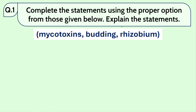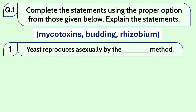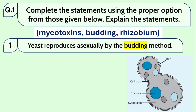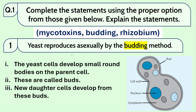Question number 1: reproduces asexually by the budding method. What happens here — this is the parent body, and this is a bud. Initially it is small, but as the parent cell gets nutrition it grows large, and at one point it separates from the parent body.